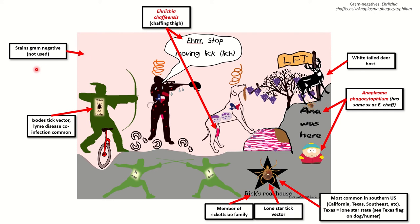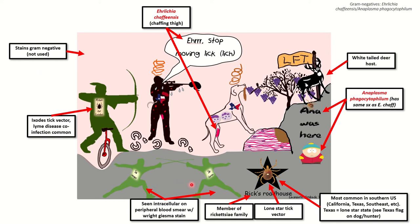It does stain gram-negative, but that's not used for the diagnosis. The diagnosis is actually made via seeing the characteristic findings on a peripheral blood smear with a Righ-Gamsa stain, so we have Sir Rite and Sir Gamsa to remind us of that stain.